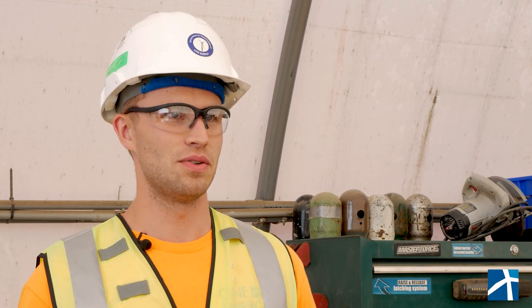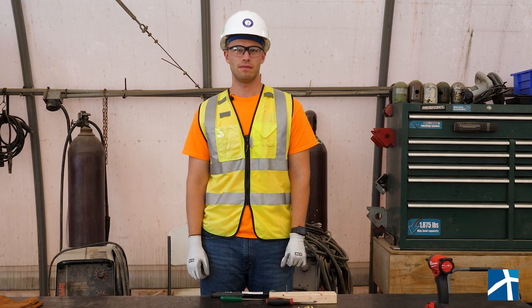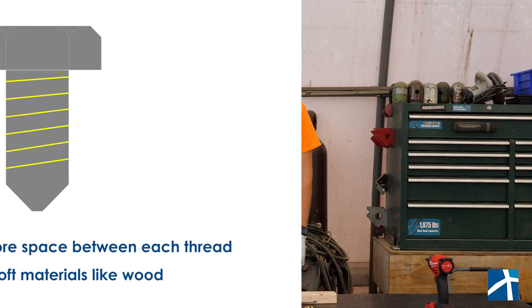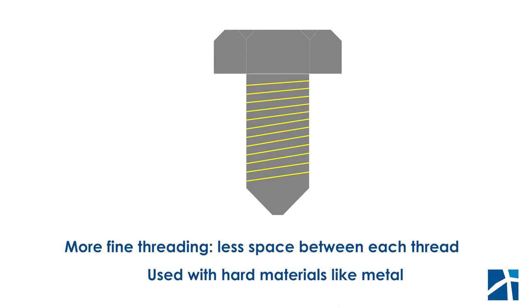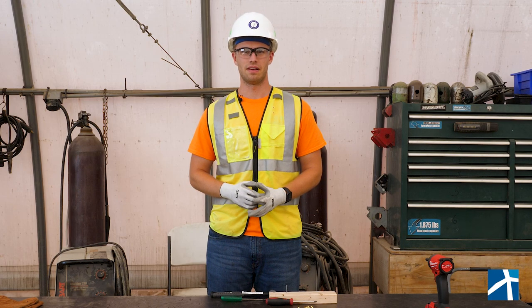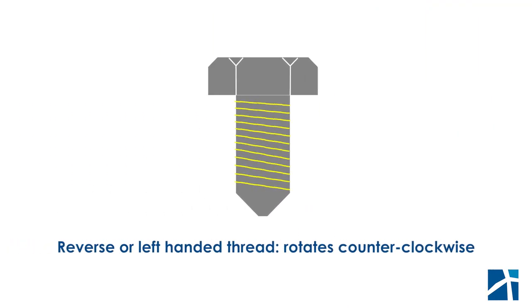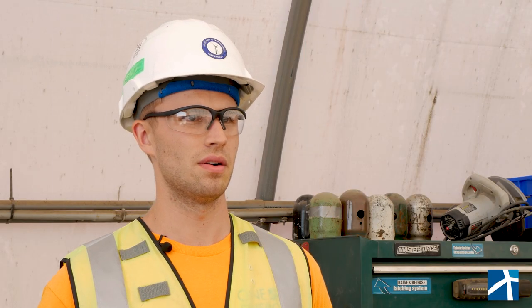There are also different types of screw threads that differ depending on the function, with the main physical difference being how fine the threads are. This refers to the amount of space between each thread. Less fine threading, or more space between the individual threads, is used for soft materials like wood, and more fine threading, which is less space between the individual threads, is used for hard materials like metal. Additionally, there is a special type of thread known as the reverse or left-handed thread. A reverse thread is a thread that goes in the opposite direction of a regular thread, or counterclockwise.